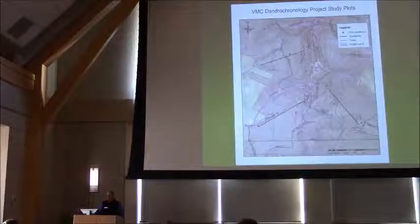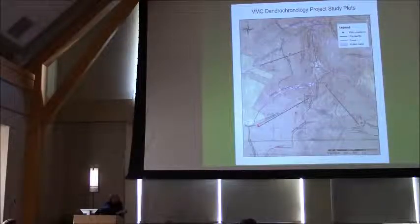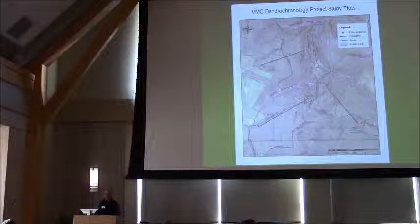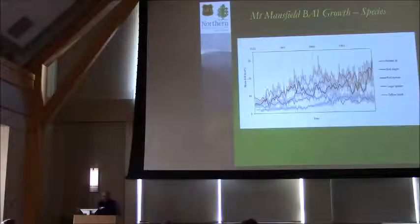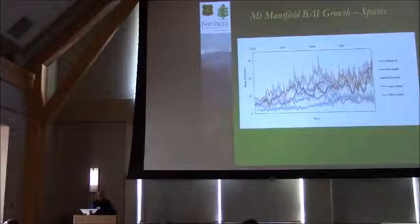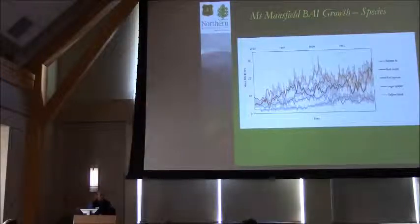These are the transects up Mount Mansfield — low elevation, mid-elevation, and high, up three watersheds. The only watershed we didn't sample was the ski area because we thought there might be artifacts there. Looking at all species together over all elevations at the same time, you can see the big-picture trajectory. At the early part of the chronology, these trees were probably not in the overstory; by the end, they're dominant and co-dominant.